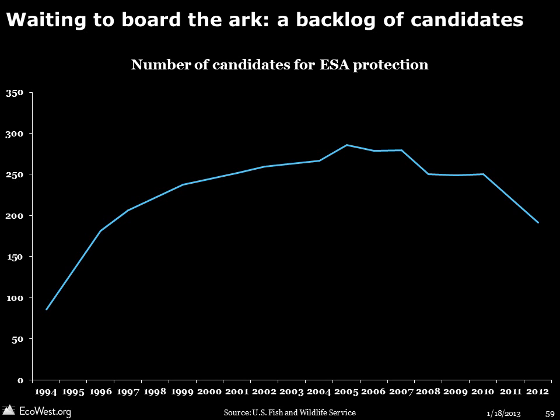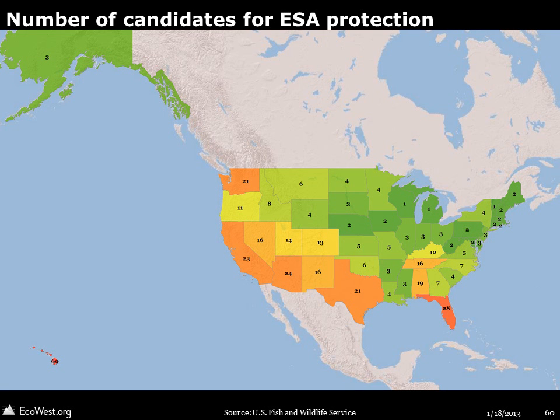Many species that the US Fish and Wildlife Service has judged at risk of extinction are not receiving protection from the ESA. Nearly 250 species have been declared as candidates, meaning their listing is biologically warranted but precluded by budgetary constraints. This list is akin to a queue waiting to board, and has been the subject of some recent litigation. Hawaii, the Pacific Coast, the Southwest, Appalachia, and Florida tend to have the most candidate species.